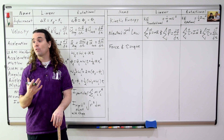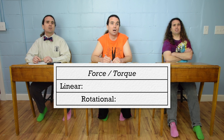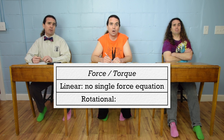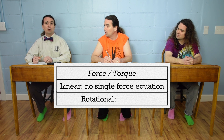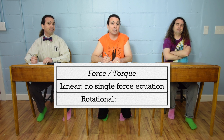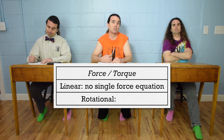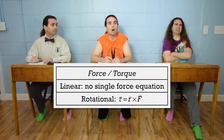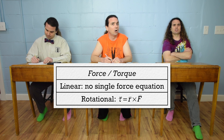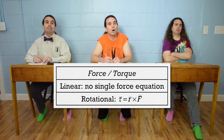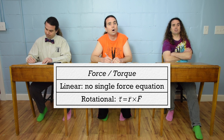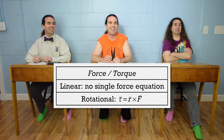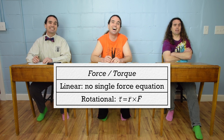Bo, please give us the equations for force and torque. There is no general equation for force. There are only equations for net force. There are equations for some forces, like the force of gravity and the force of friction. However, there is no general equation for a single force. The equation for torque is torque equals the cross product of R and F. The symbol for torque is the lowercase Greek letter tau. R is the position vector from the axis of rotation to the location of the force. And torque, R, and F are all vectors. The order matters because the cross product is not commutative, so it has to be R cross F in that order.